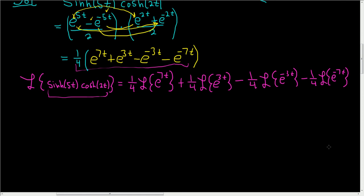Almost there. So now we just have to use the formula for the Laplace of e to the at. Recall that the Laplace of e to the at, this is simply 1 over s minus a. So in our problem, this first piece here, the 1 fourth hangs out, and a is 7. So it's 1 over s minus 7.